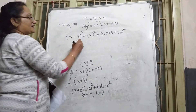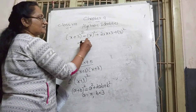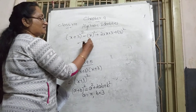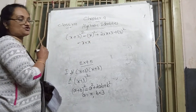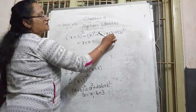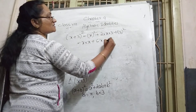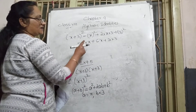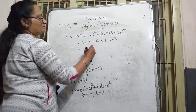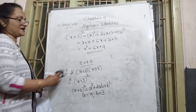Substituting: A = x and B = 3. Left side: (x + 3)². Right side: x² + 2 × x × 3 + 3². That gives x² + 6x + 9. This is the final answer.